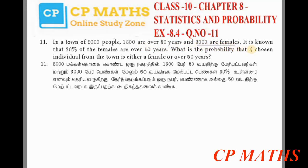It is known that 30% of the females are over 50 years. What is the probability that a chosen individual from the town is either a female or over 50 years? This problem is based on the addition probability theorem.